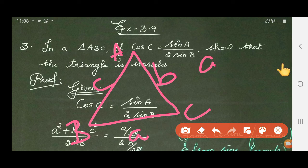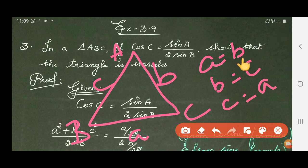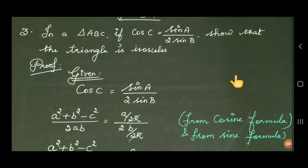We need to show that the triangle is isosceles. An isosceles triangle has any two sides equal. So if the condition is satisfied, we must get the answer as a equal to b, or b equal to c, or c equal to a — meaning the triangle is isosceles.